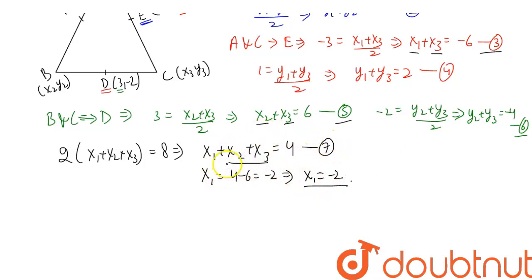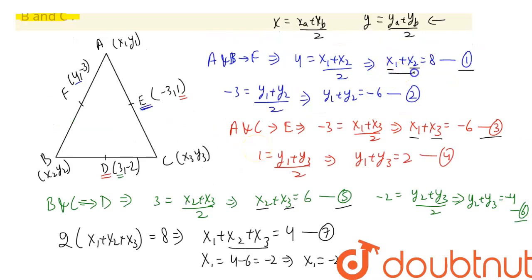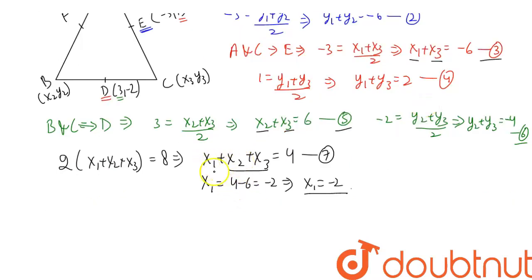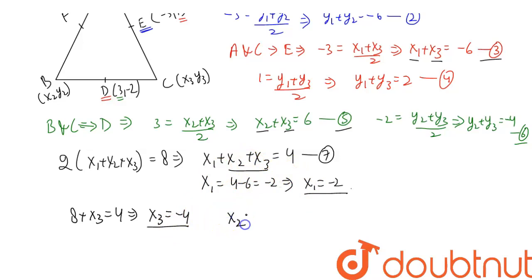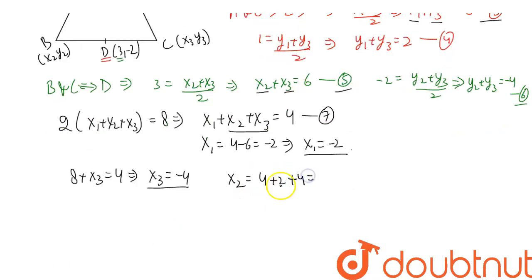From equation 1, x1 + x2 = 8. Substituting into equation 7: 8 + x3 = 4, so x3 = -4. Now substituting x1 = -2 and x3 = -4 into equation 7: x2 = 4 - (-2) - (-4) = 4 + 2 + 4 = 10. So x1 = -2, x2 = 10, and x3 = -4.